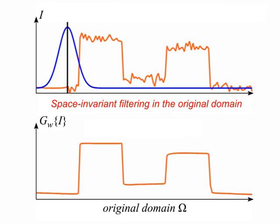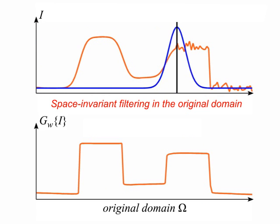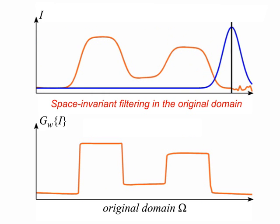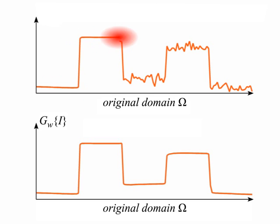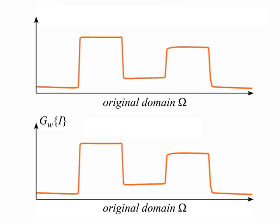For comparison, we perform a space-invariant filter in the original domain, which does not preserve these edges. Furthermore, if we perform a costly high-dimensional filter in the original domain, we also obtain the desired result. However, filtering in the transformed domain can be performed much more efficiently.